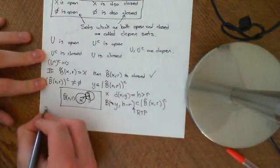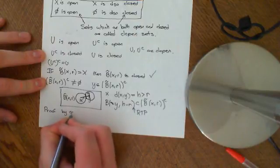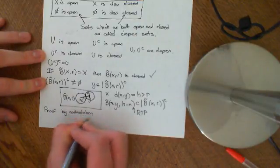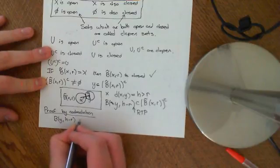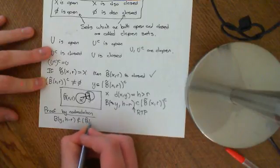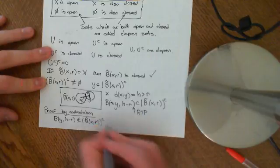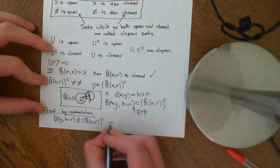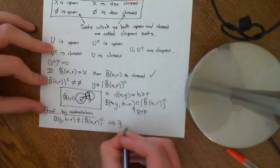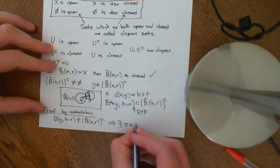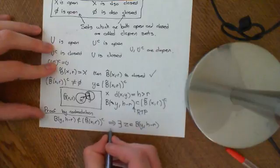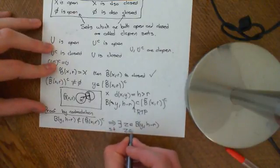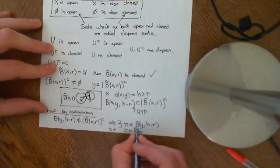We're going to do a proof by contradiction. Suppose this is not true — suppose the ball centered at Y of radius H minus R is not completely contained within the complement of the closed ball centered at X of radius R. Then it would be true that there exists a point, let's say Z, which is an element of this open ball centered at Y of radius H minus R.